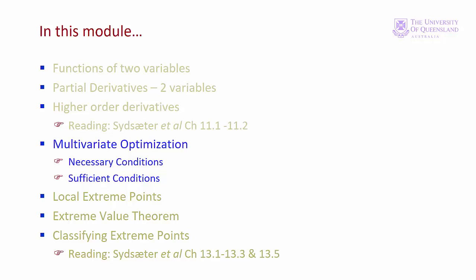In Module 1 we looked at the first and second order partial derivatives. In this module we'll apply those functions to multivariate optimisation. We'll examine the necessary first order conditions for stationary points, then look at the sufficient second order conditions for global extreme points. In Module 3 we'll cover the necessary and sufficient conditions for local extrema, the extreme value theorem, and the procedure for classifying all extreme points.